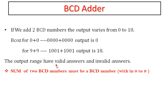A BCD adder is a circuit that adds two BCD numbers and produces a sum in BCD output. The output range of BCD addition varies from 0 to 18. The lowest BCD number is 0, so 0 plus 0 results in 0. The highest is 9, so 9 plus 9 results in 18. This output range contains both valid and invalid answers.